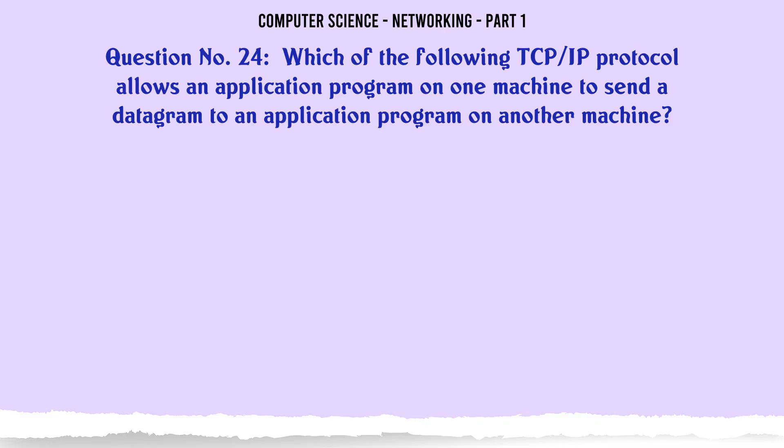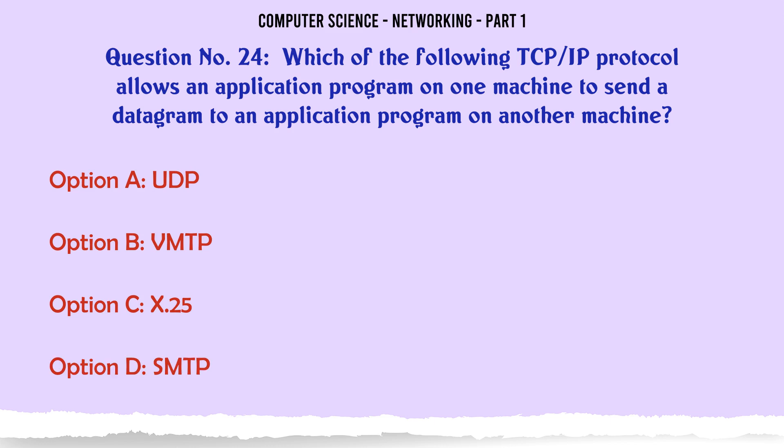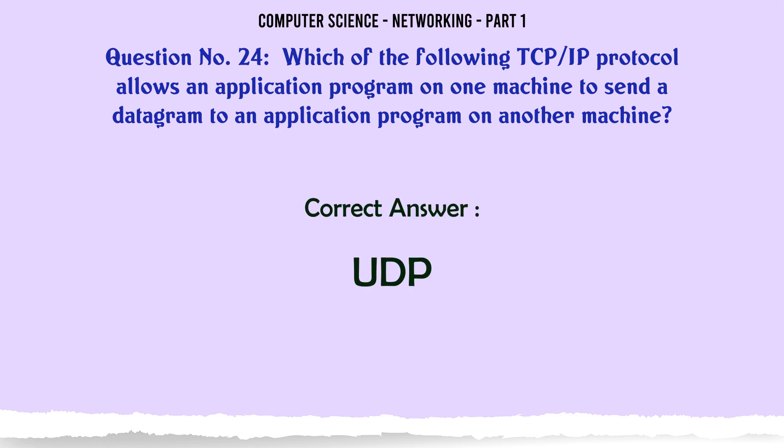Which of the following TCP/IP protocols allows an application program on one machine to send a datagram to an application program on another machine? A. UDP. B. VMTP. C. X.25. D. SMTP. The correct answer is: UDP.